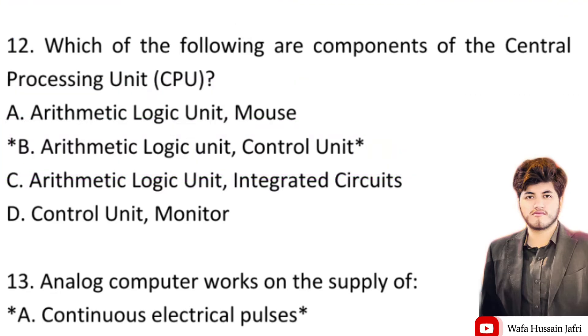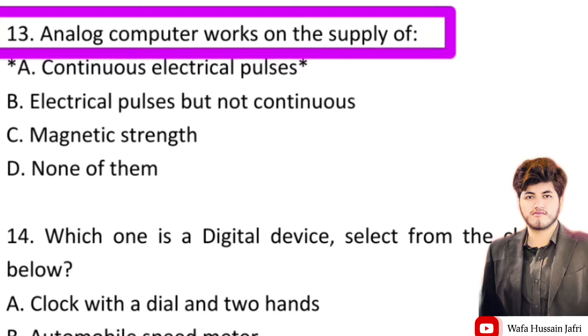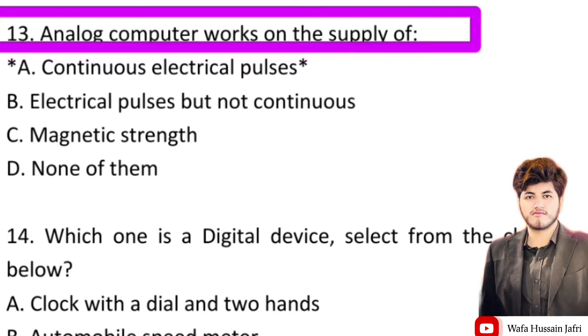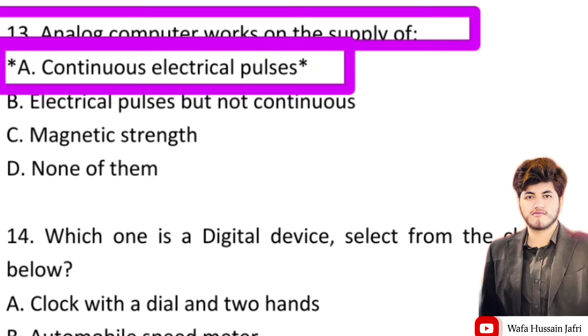Similarly, our next question is: an analog computer works on the supply of — the right answer is continuous electrical pulses.